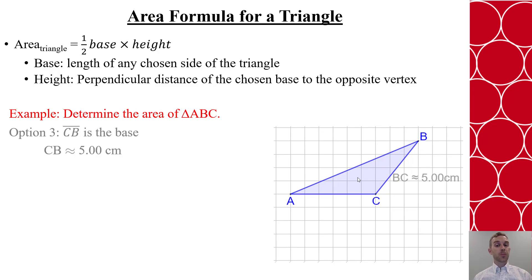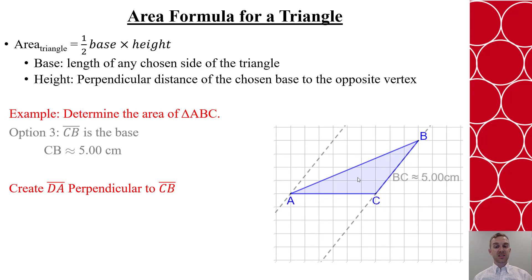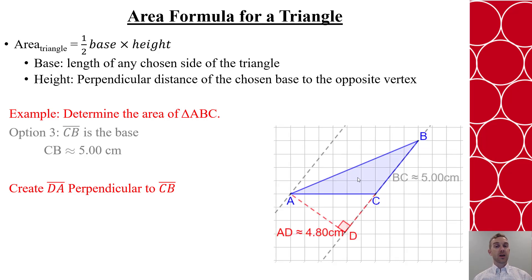Now I want to create a perpendicular distance from side BC over to A, and we'll create that segment AD. So make the parallel line through BC and through A, and now we're going to make that perpendicular up to point A. We'll use GeoGebra to help us measure it, and it'll be approximately 4.8 centimeters.